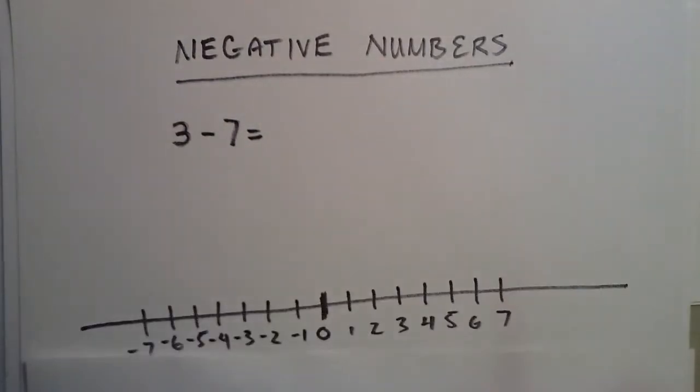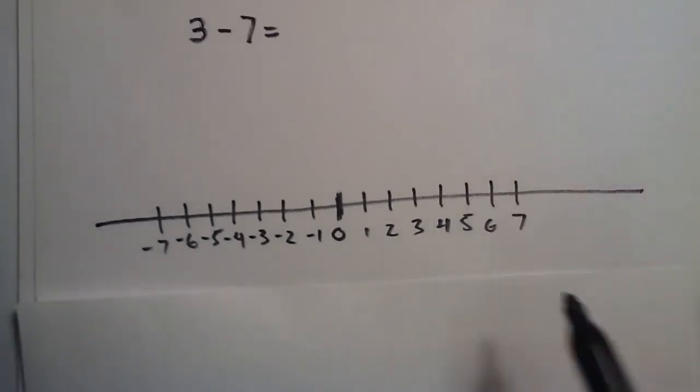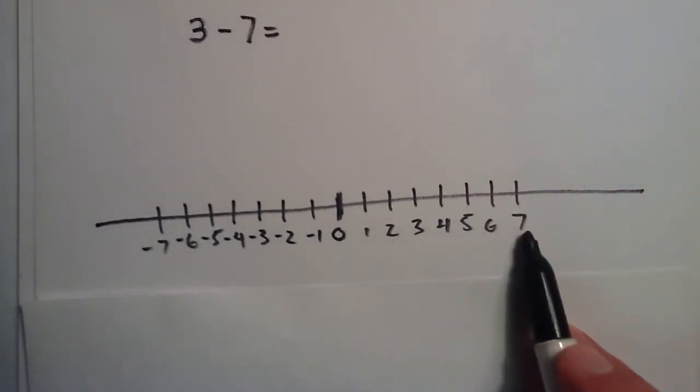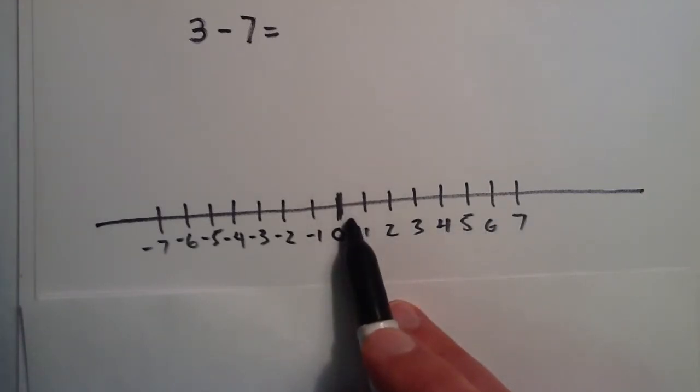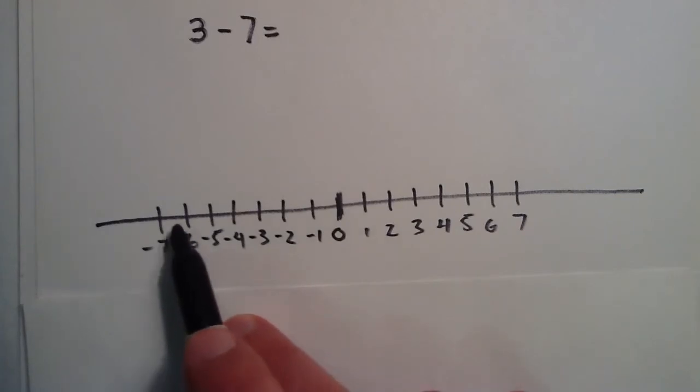So over here I've drawn a number line. We can pretend that the numbers on the right-hand side of 0 all represent the amount of dollars that you might have. And the numbers on the left-hand side, the negative numbers, are basically the numbers that you don't have, the numbers that you owe the bank.